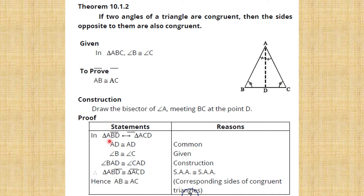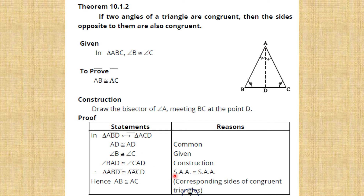We have proved one side and two angles. This is why these two triangles are congruent. When one side and two angles are congruent, the triangles are congruent by the SAA (side-angle-angle) postulate.